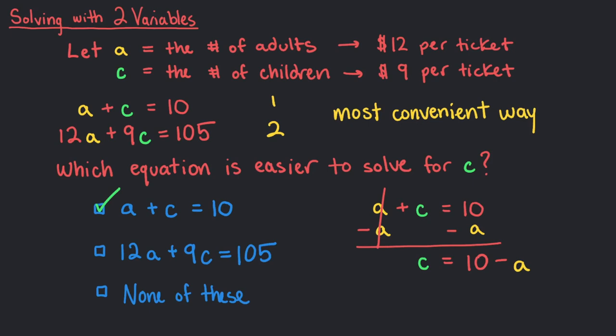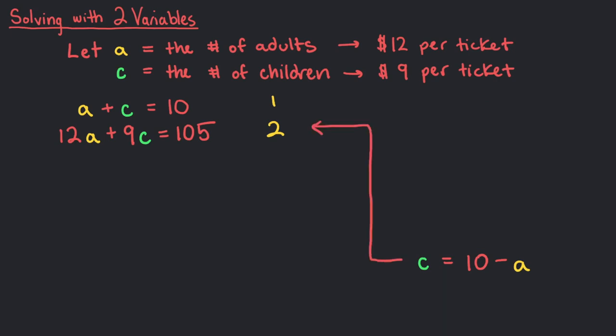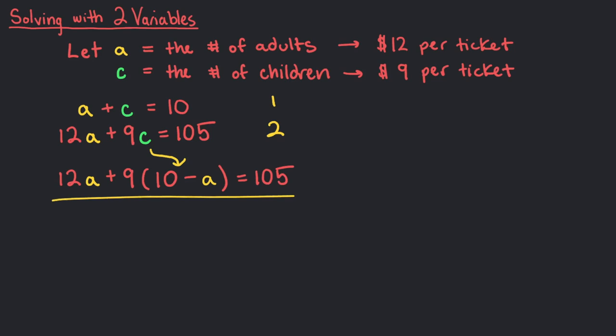We can substitute this equation into our second equation. We will replace the c in the second equation for 10 minus a, since we know c equals 10 minus a. This turns our two equations into one, but now we only have one variable, a, so we can solve it.